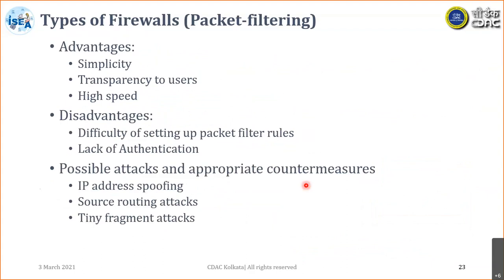Advantages of packet filtering: they are simple, transparent, and of high speed. Disadvantages include difficulty in setting up packet filter rules and lack of authentication. When writing rules, there can be hundreds of them — after a year or two you could end up with 2000 rules, making management difficult. There is no authentication: if a rule matches, it is allowed. IP address spoofing is a possible attack — if you change the IP address, the rule may allow the spoofed traffic.